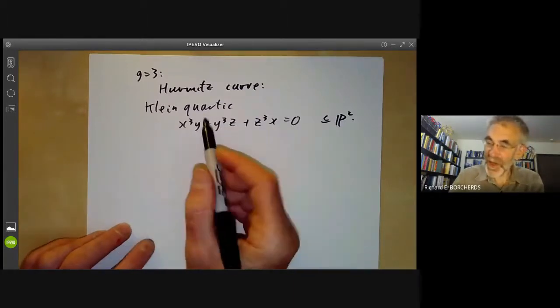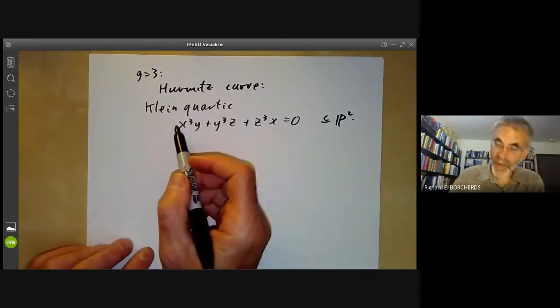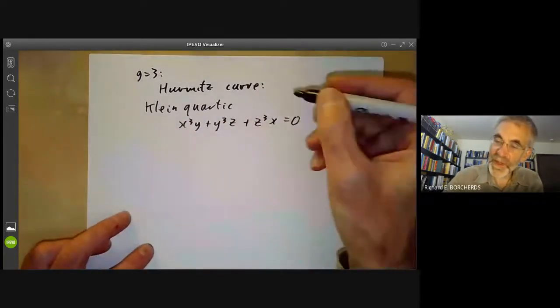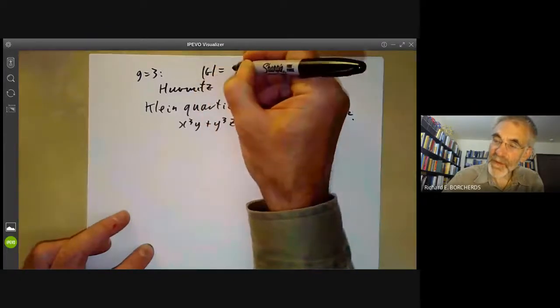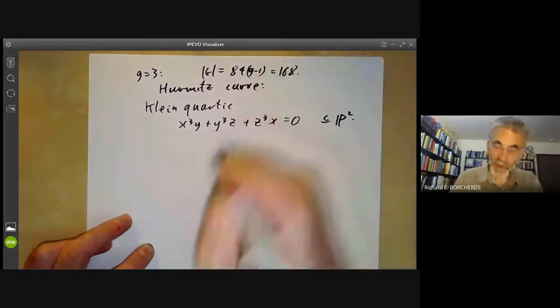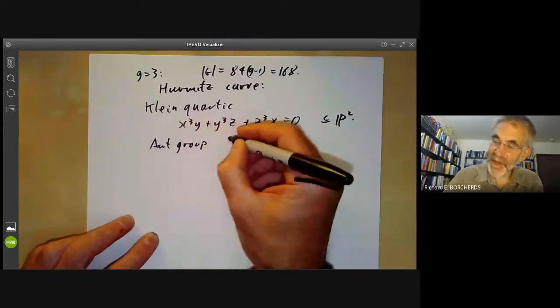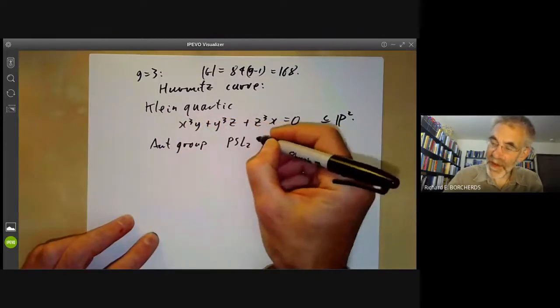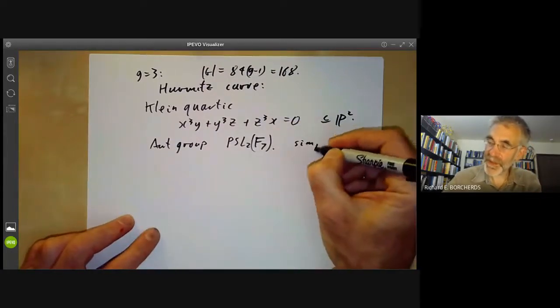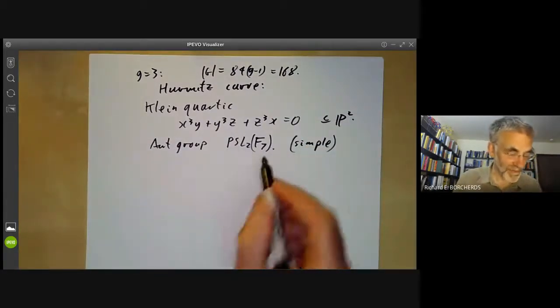And in fact it's the only curve, up to isomorphism, whose automorphism group achieves this bound, which I forgot to write down. So the order of the group is going to be 84 G minus 1 equals 168. Its automorphism group is in fact PSL(2,F_7), which is a simple group of order 168. It's the next smallest simple group after the alternating group A_5 of order 60.